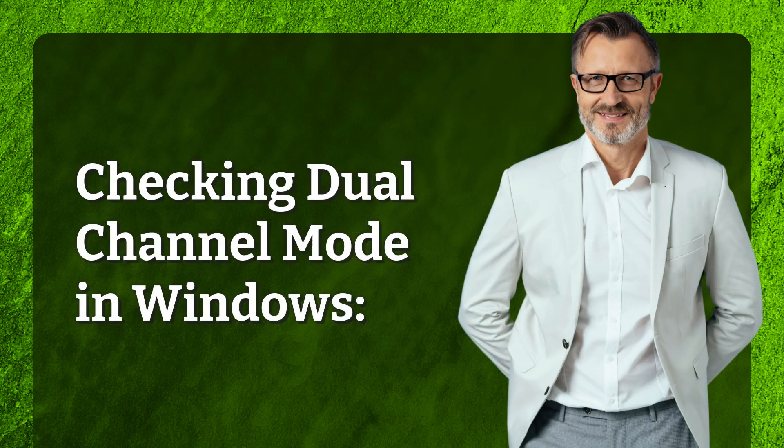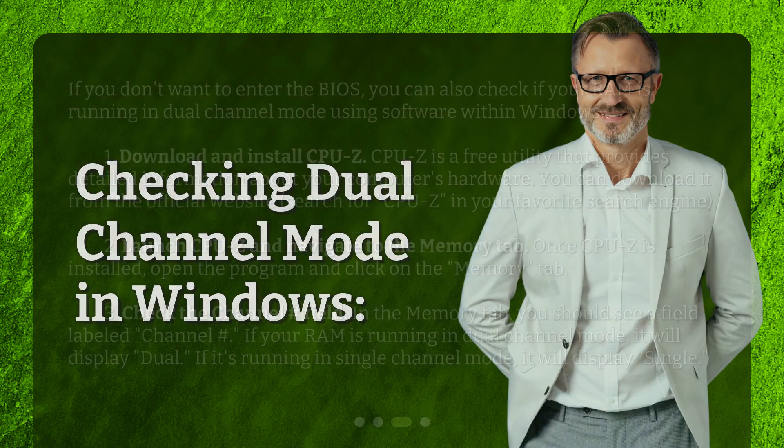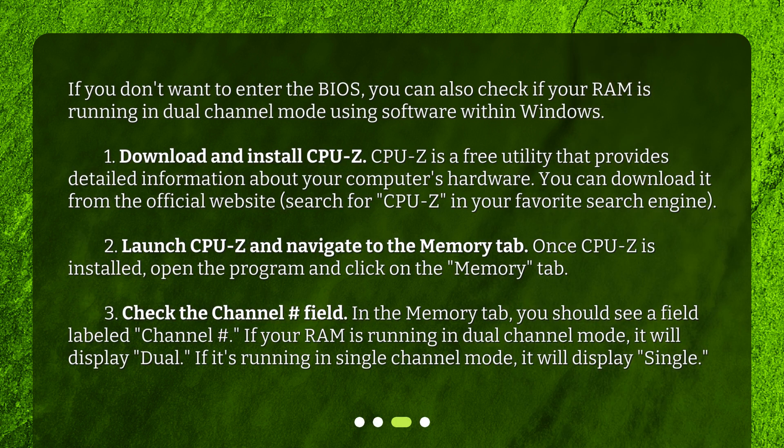Checking dual channel mode in Windows. If you don't want to enter the BIOS, you can also check if your RAM is running in dual channel mode using software within Windows. Download and install CPU-Z, a free utility that provides detailed information about your computer's hardware. You can download it from the official website by searching for CPU-Z in your favorite search engine.